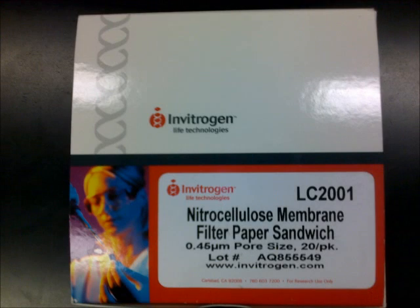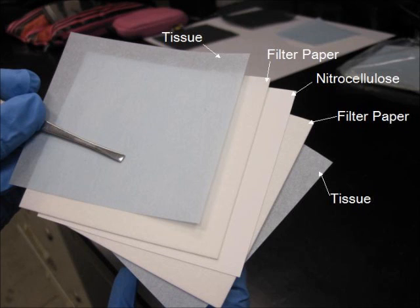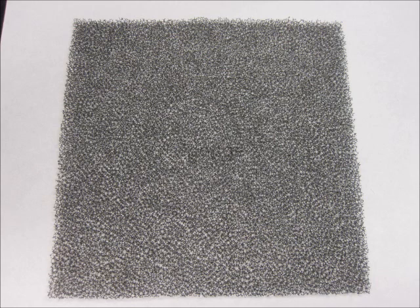Obtain one nitrocellulose sandwich set. This is what one set looks like. The blue tissue sheets will be discarded. The two pieces of filter paper look like card stock. The nitrocellulose has a shiny appearance and should only be handled with tweezers. You will also need two sheets of sponge.